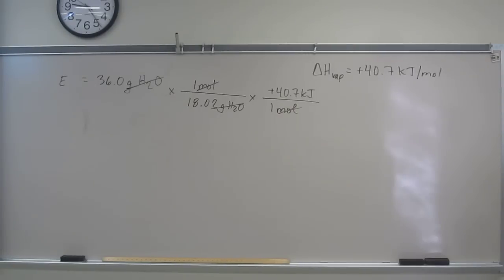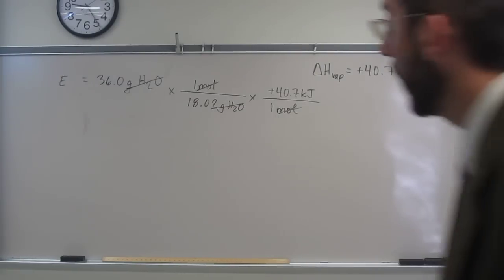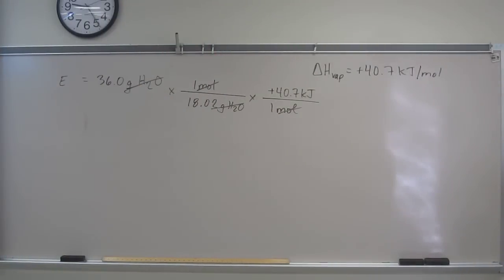36 divided by 18.02 times 40.7. And, it doesn't tell us what energy units it wants it, but it does say three sig figs, right? So, I mean, that 36.0 gives us three sig figs. So, I got 81.3 kilojoules.